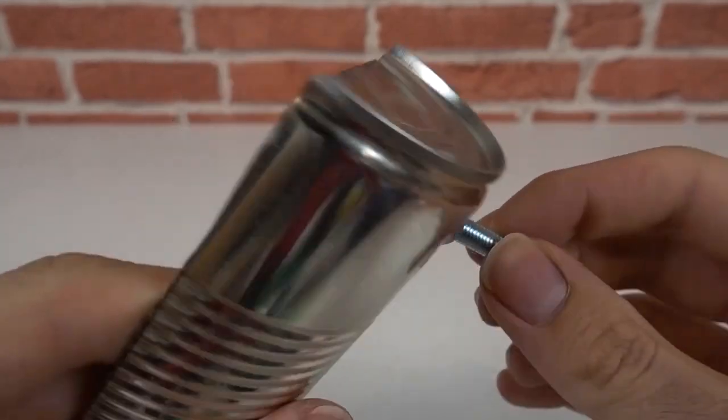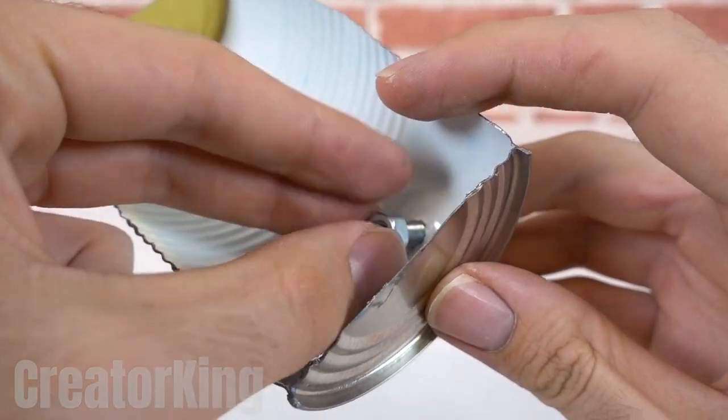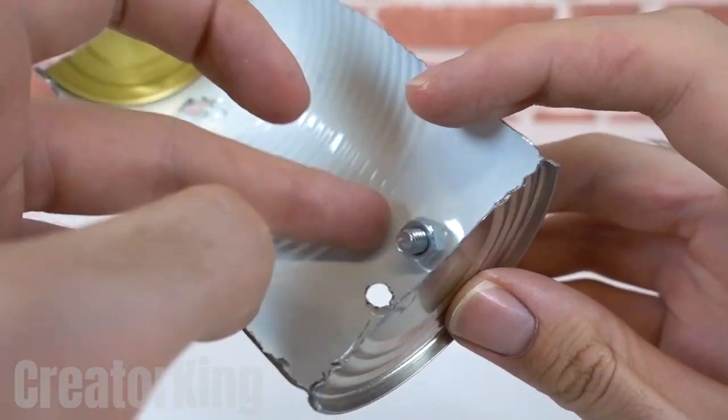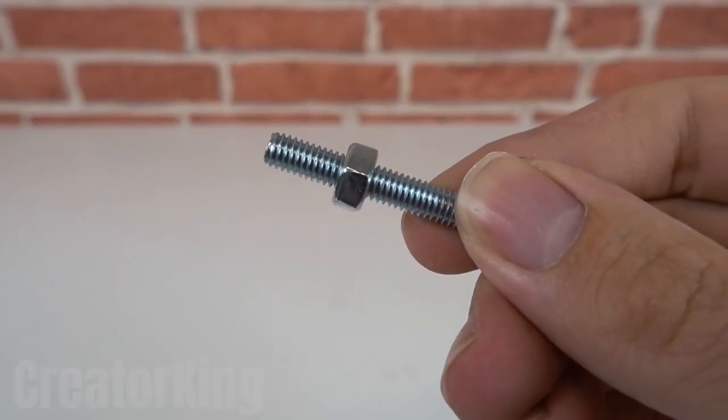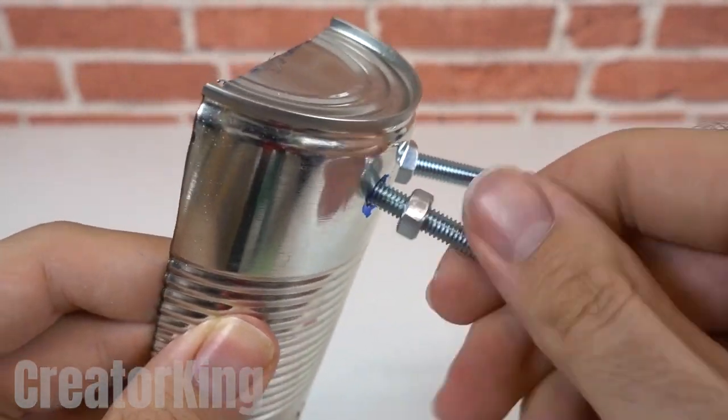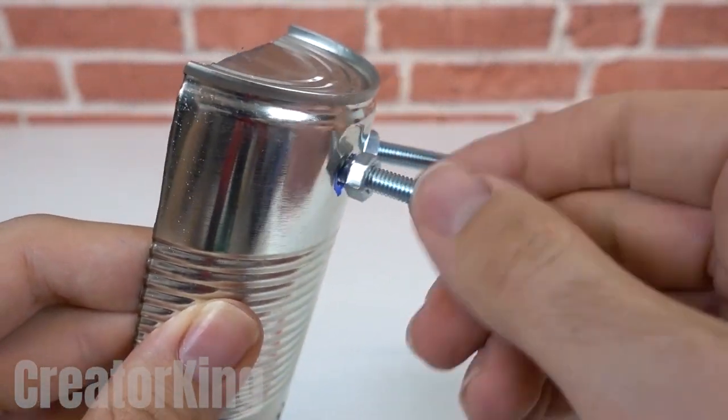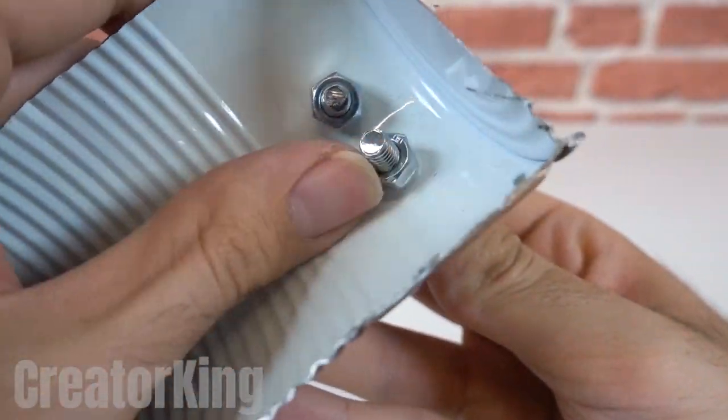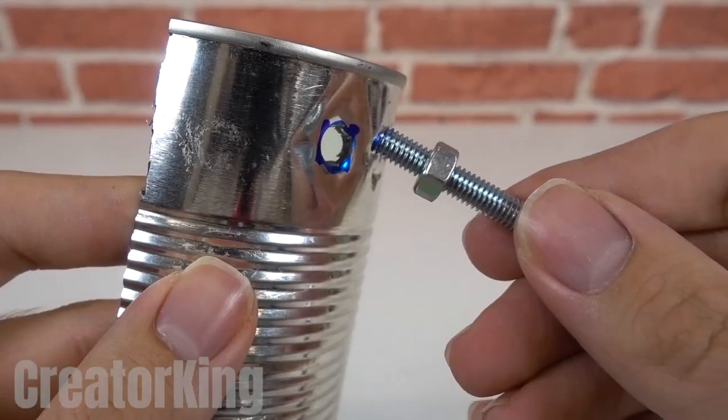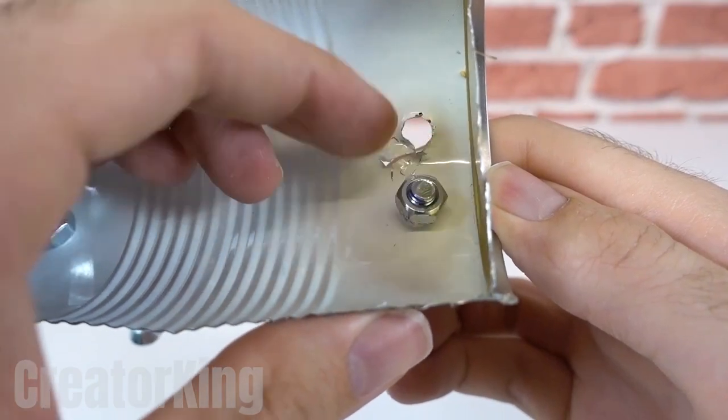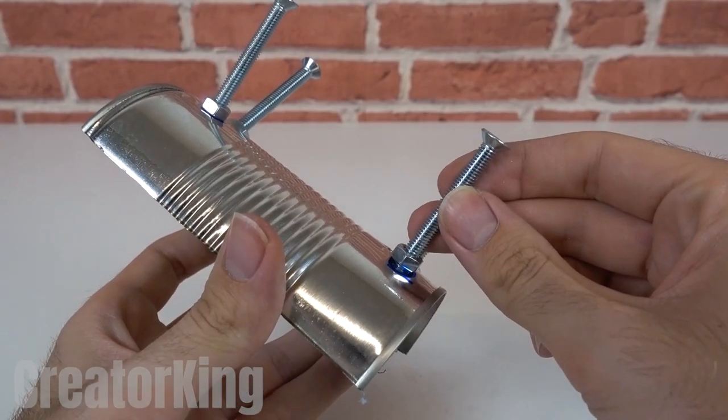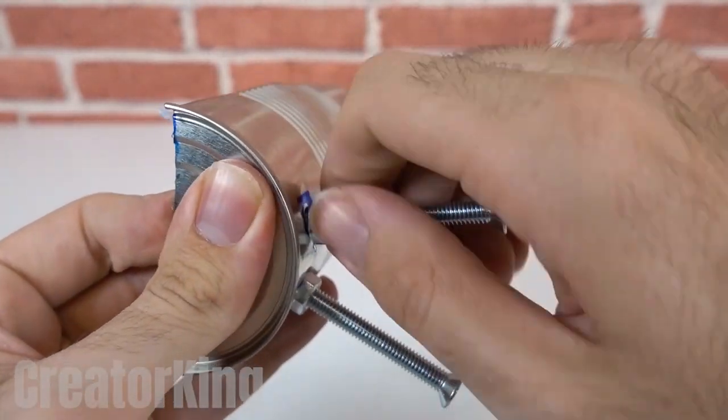This time we'll use nuts to hold the screws in place instead of glue because the heat of our powerful grill would melt it and it would combine with our meat. That's something we don't want, so tighten those nuts. I can already smell the roasted sausage that I will eat. Lately I only think about eating once we have the legs on which our rotisserie is ready.